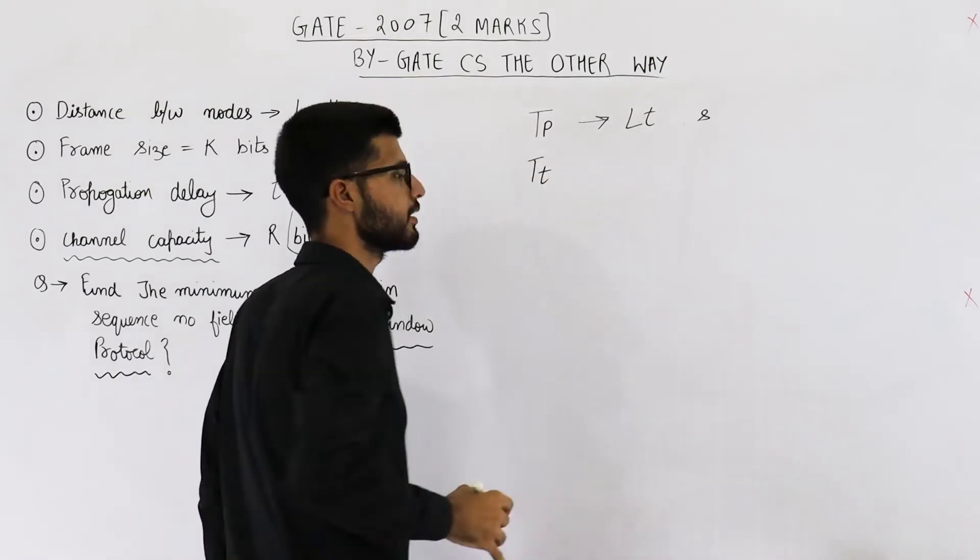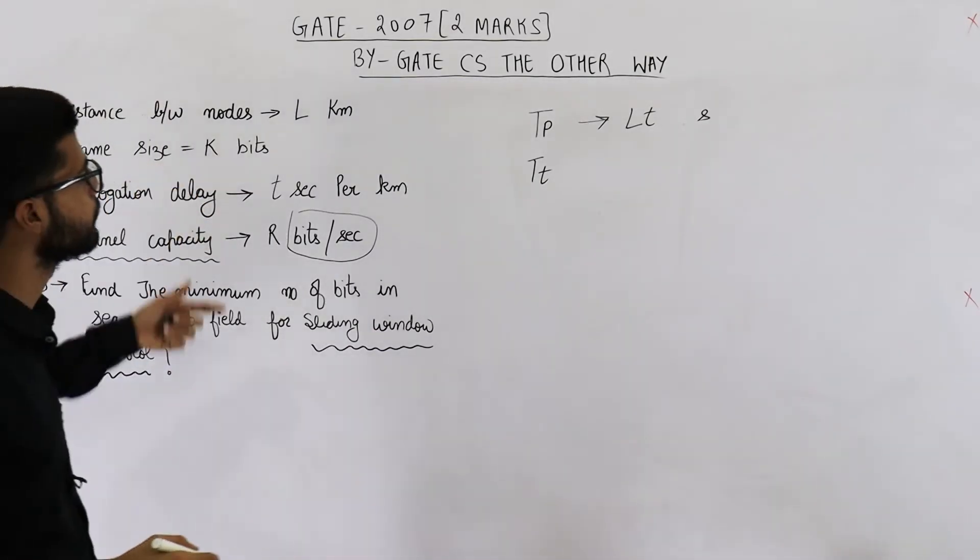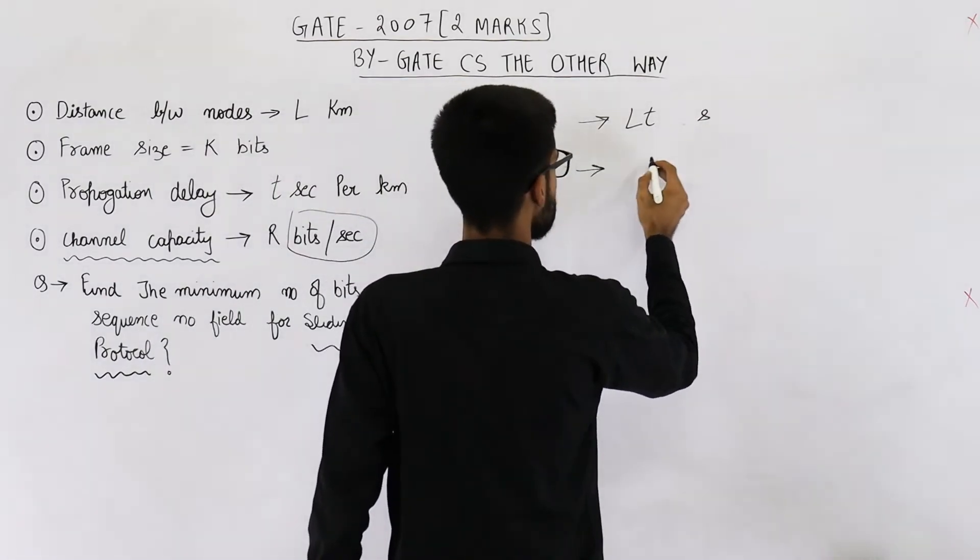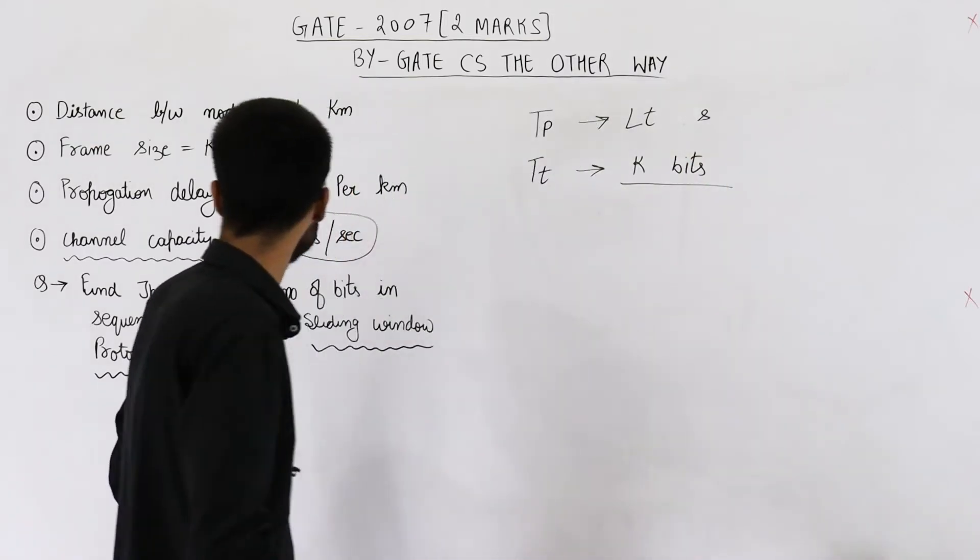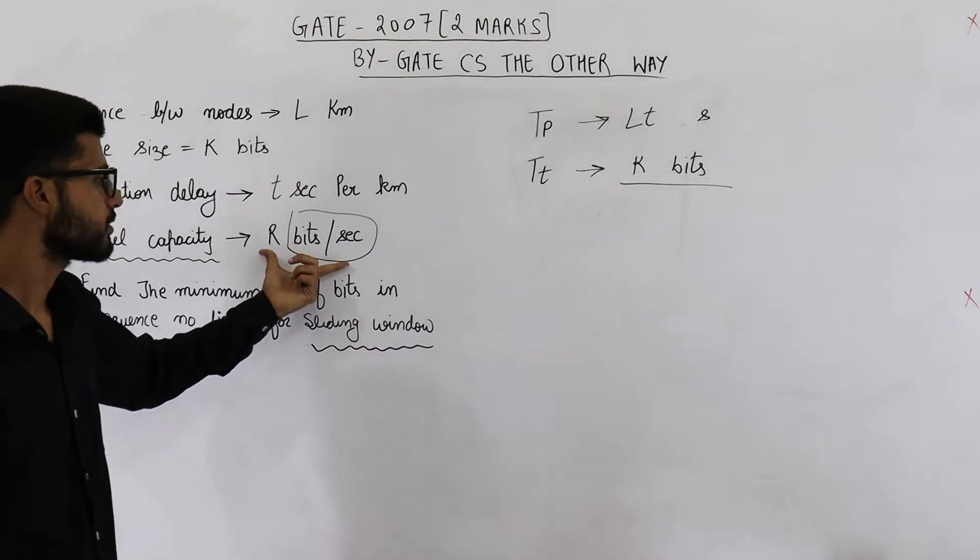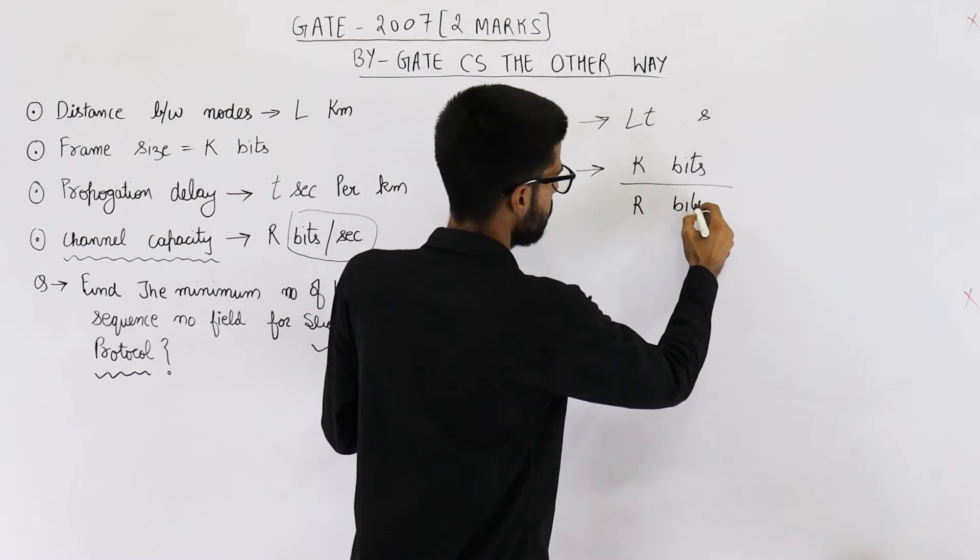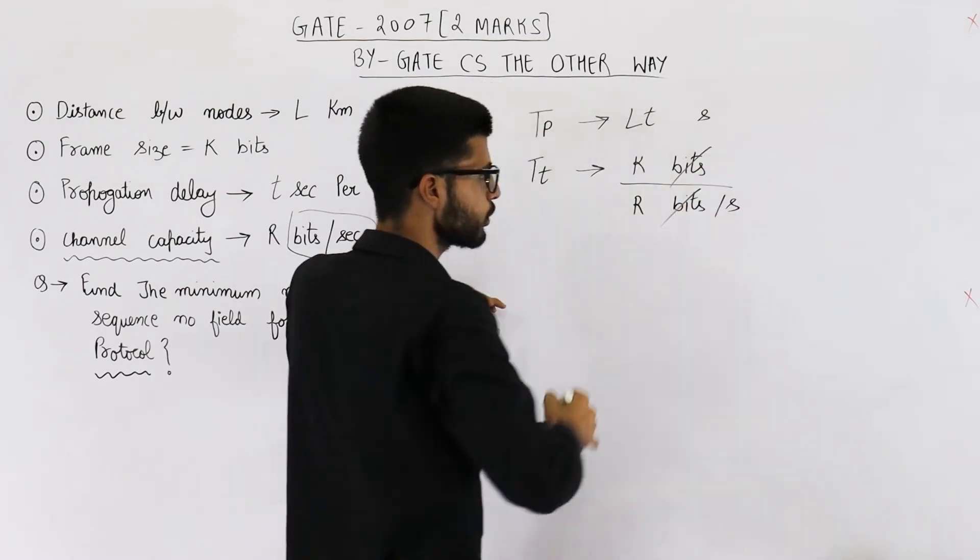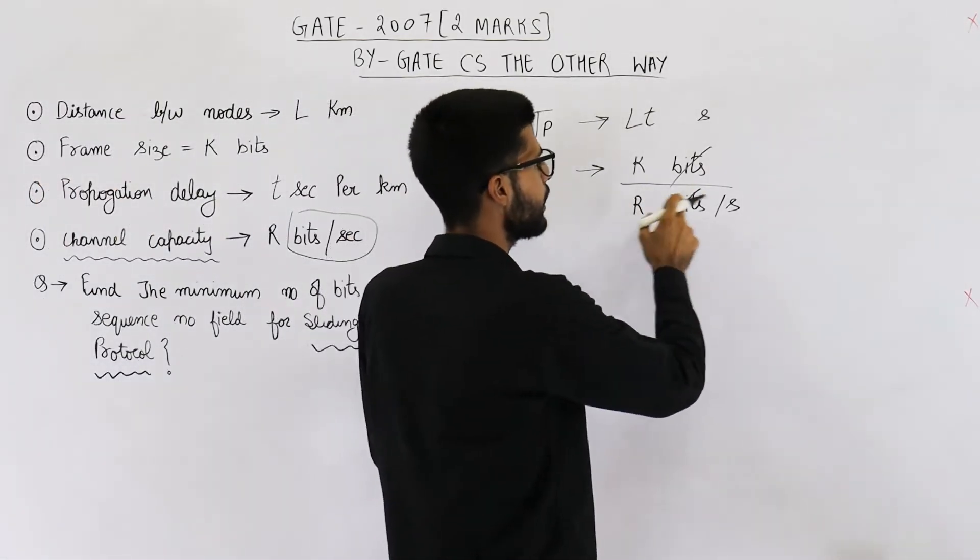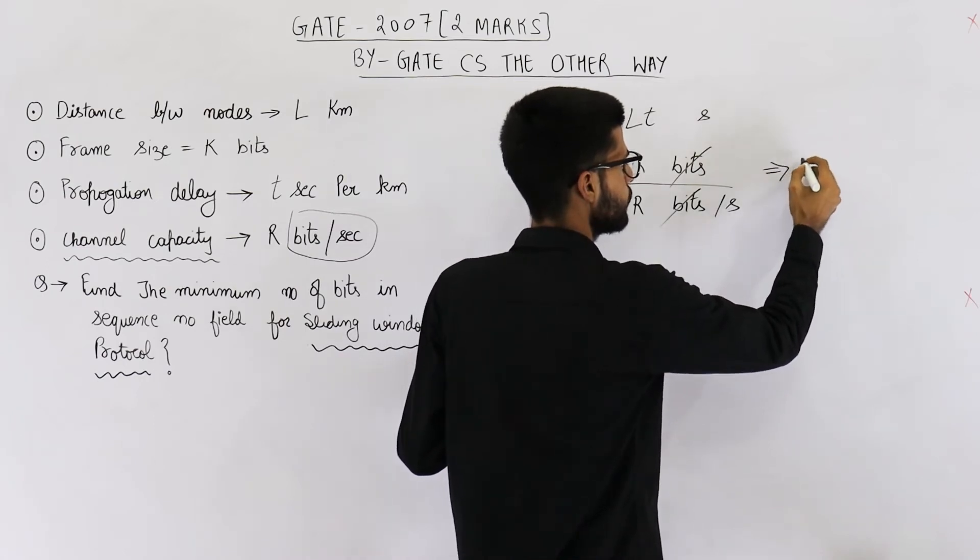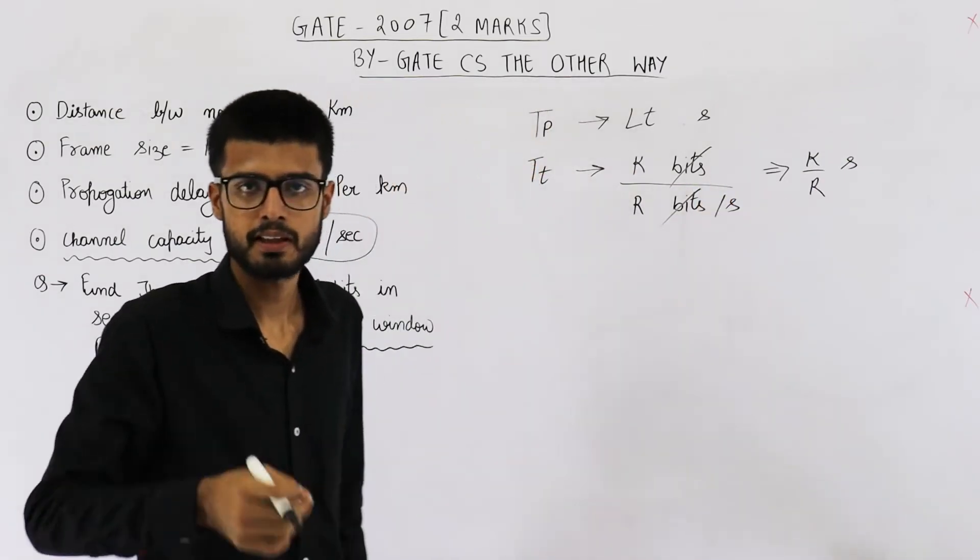Now let's determine the transmission delay. Transmission delay is defined as the frame size divided by bandwidth available. So this is K bits divided by R bits per second. Now bits and bits will get cancelled. And the unit that is left will be seconds only. So this can be written as K by R seconds. Because this per second will become second if written in numerator.